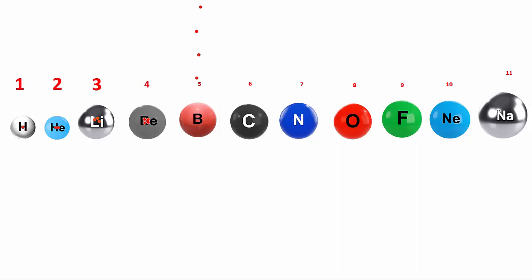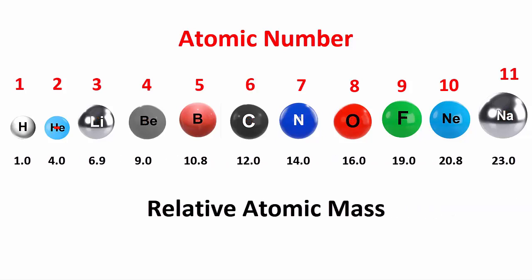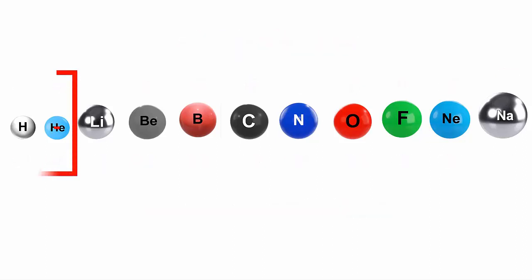Past videos showed us that an atom's protons in its nucleus tells us its atomic number, or what kind of atom it is. But most of an atom's mass comes from its protons and neutrons, which are also found in the nucleus.